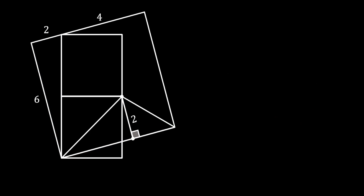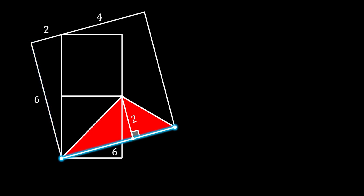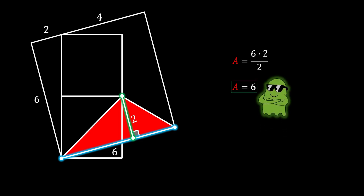Looking at the wanted red triangle, its base equals the side of the tilted square, which is 6. With base 6 and height 2, the area is (6 × 2) / 2 = 6 square units. That is the solution from method one.